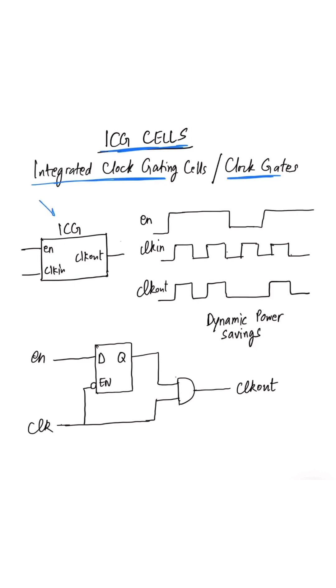So at a high level an ICG looks like this where we have an enable pin, a clock in pin and a clock out pin.